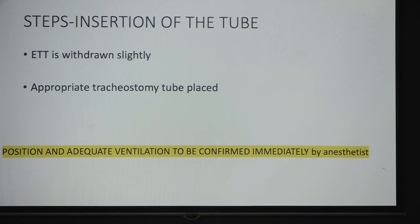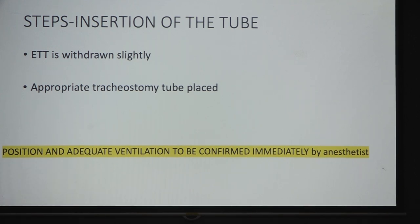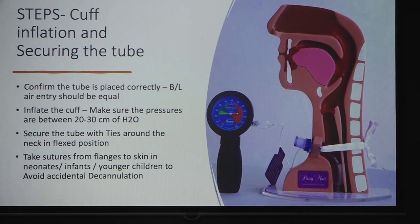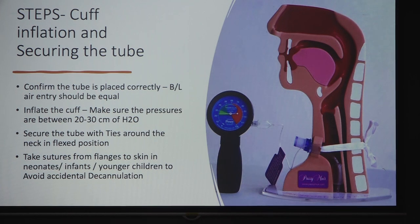When the opening in the trachea is created, withdraw the endotracheal tube slightly — never remove it completely. Place the appropriate tracheostomy tube under direct vision, as the risk of a false passage is always present in a narrow field. Confirm position and adequate ventilation with the anesthetist immediately. Inflate the cuff and measure cuff pressure, keeping it between 20–30 cm of water. Secure the tube with ties around the neck in the flex position; in ICU ventilated patients, stitching the tube is preferred to prevent accidental decannulation.